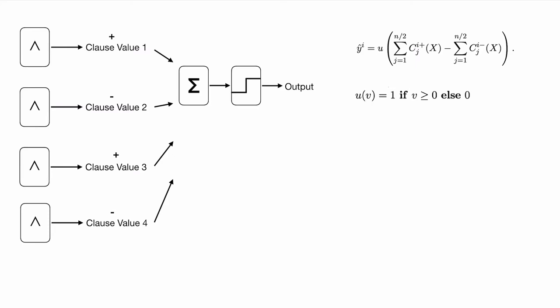Well, the summation function will sum the clause values if they have the positive polarity, and will subtract the sum of clause values with negative polarity. If the value from this subtraction is greater than or equal to 0, my function u will return 1, which means my output will become 1. In another case, if the summation result is smaller than 0, my y will become 0.